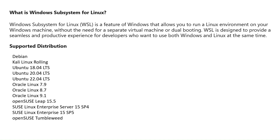Before we do that, I want to give a quick overview of what Windows Subsystem for Linux means. If you take any Windows operating system, it has inbuilt features you can activate — for example, Hyper-V, TFTP client, or IIS. Similarly, WSL, the Windows Subsystem for Linux, is one of those features. Once you activate it, you can run supported Linux distributions and Linux instances within your Windows operating system.